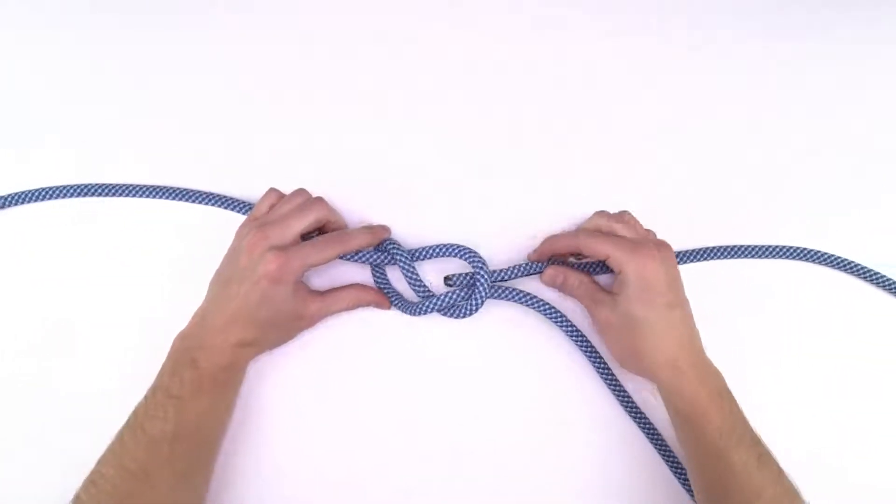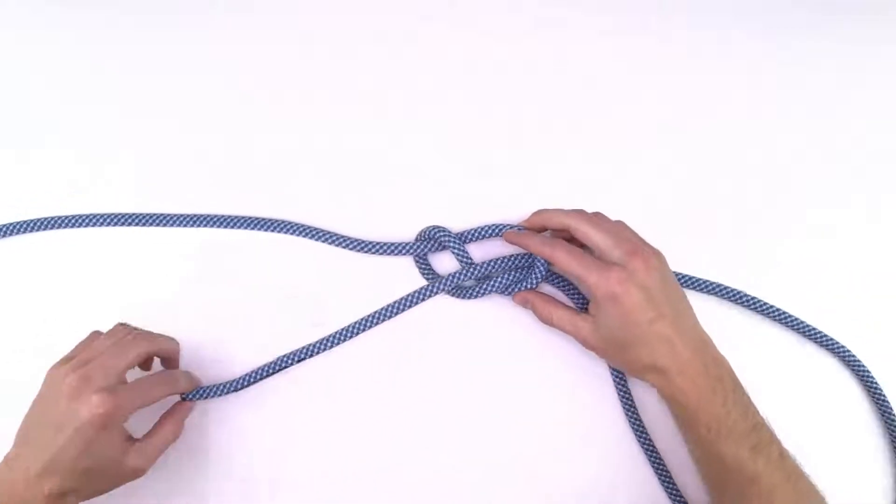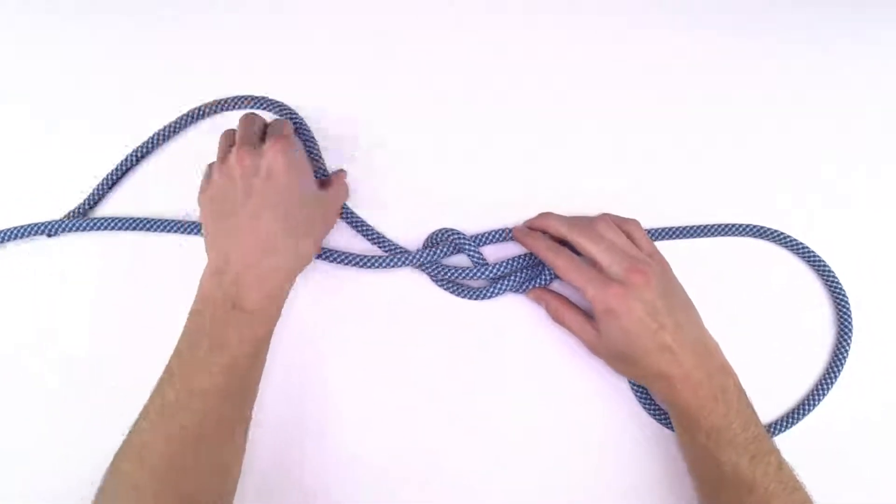Once you've done that, use the tail end of your rope to trace back through your knot, creating another figure eight.